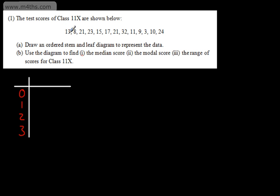We start with the number 13. With 13, we've got 1 ten and 3 units, so it goes in this row and we simply put the 3. Once I've done that, I'm going to put a line under it to tell myself I've already put that one in. Often students forget what they've put in and put numbers in more than once, or forget to put numbers in. Whatever you do, don't cross it out though, because if you make a mistake, you can't come back to it.